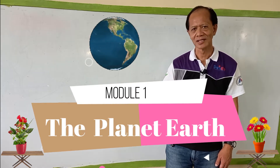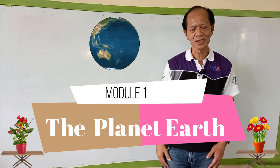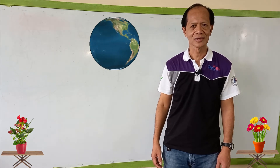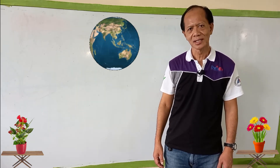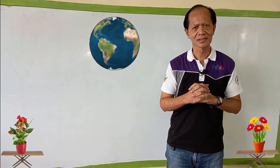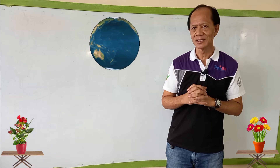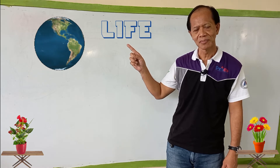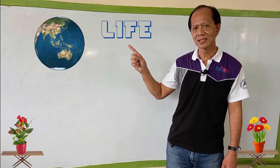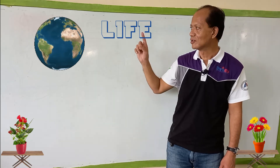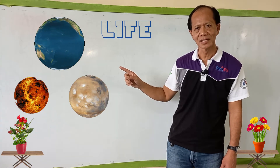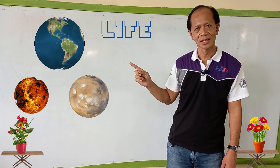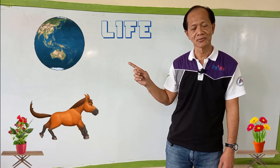So talking about our planet Earth — our planet Earth is a unique planet. Why is our planet Earth a unique planet? Because the planet Earth is the only planet with life. If we compare it to other planets like Venus, Mars, and other planets of the solar system, Earth is the only planet with life. That makes the planet Earth a unique planet.